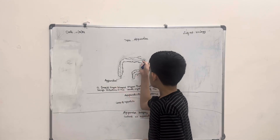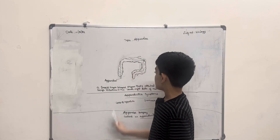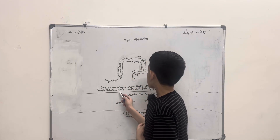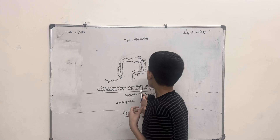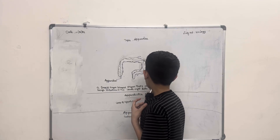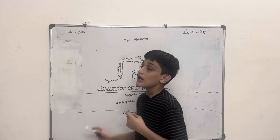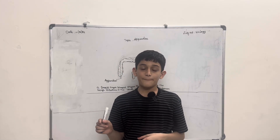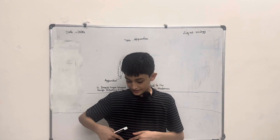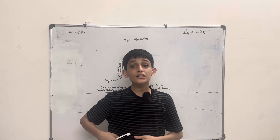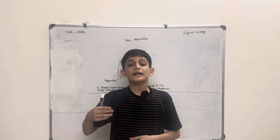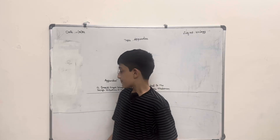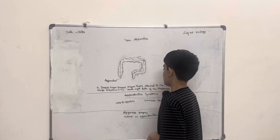What is large intestine? This is the large intestine. The large intestine is in the lower right side of the abdomen — here is the lower right side of the abdomen.